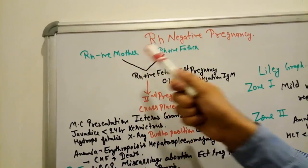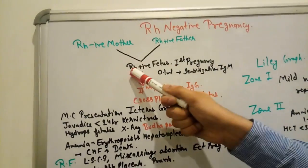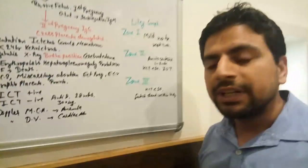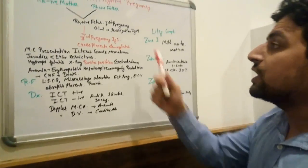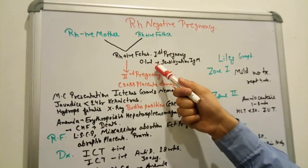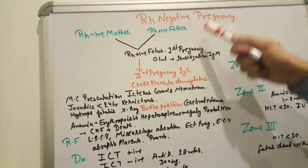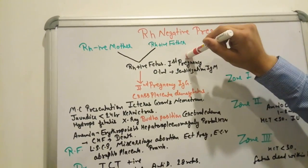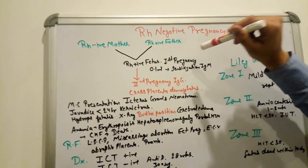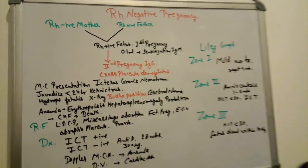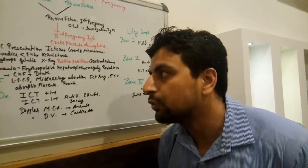When Rh positive fetus is born, only 0.1 ml of blood is sufficient for sensitization. When it enters the mother's circulation, it creates IgM immunoglobulin in the acute phase.